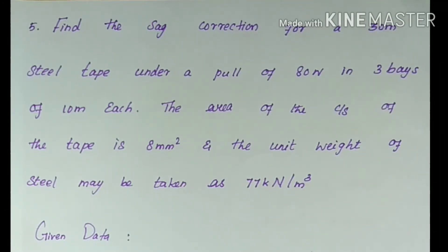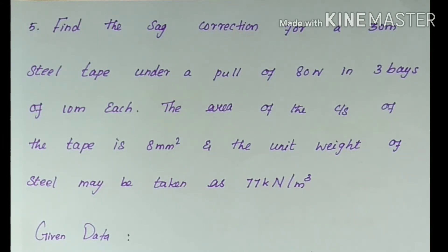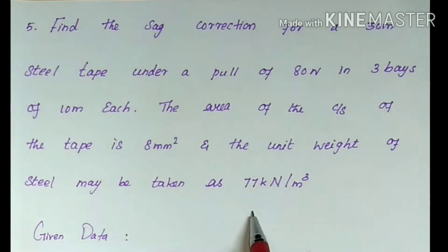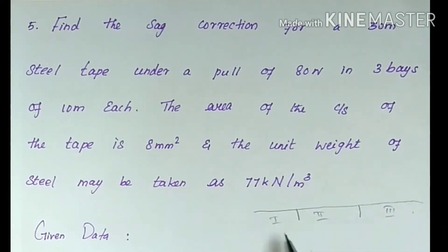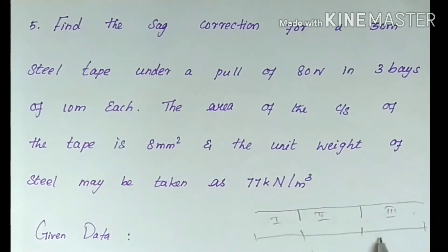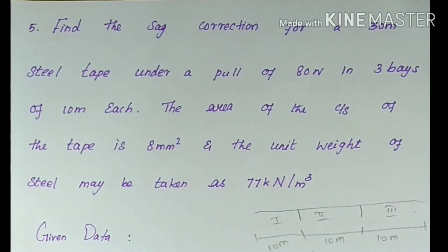Next, let's understand the meaning of sag correction. If we are acting straight on the tape it sags, so we need to apply sag correction. The given data: 30 meters steel tape with a pull of 80 N, it has 3 bays with length 10 meters each — b1, b2, b3 — so each bay is 10 meters, giving a total of 30 meters.